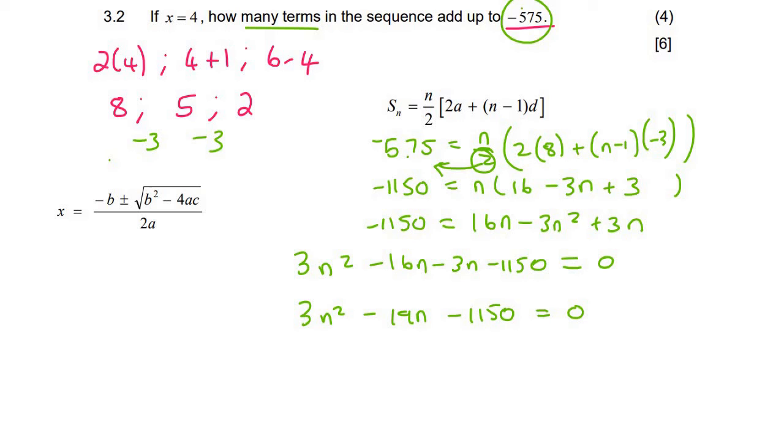Then I would use the quadratic formula to work out n. And you guys know how to use the quadratic formula. So it would be n equals minus 19 plus or minus the square root. And then you'd put minus 19 squared minus 4.